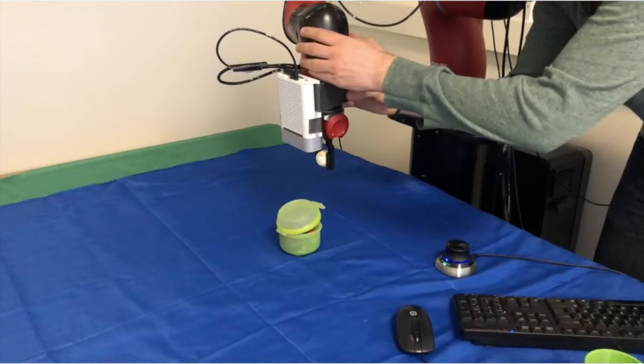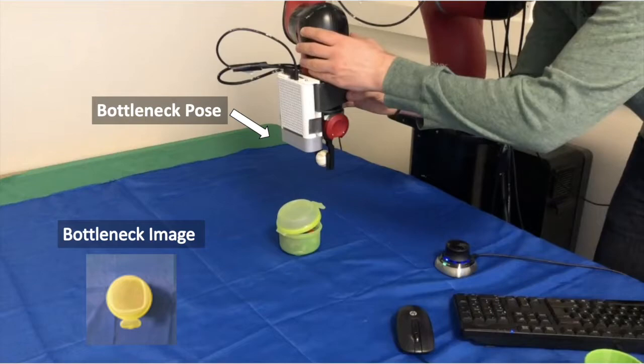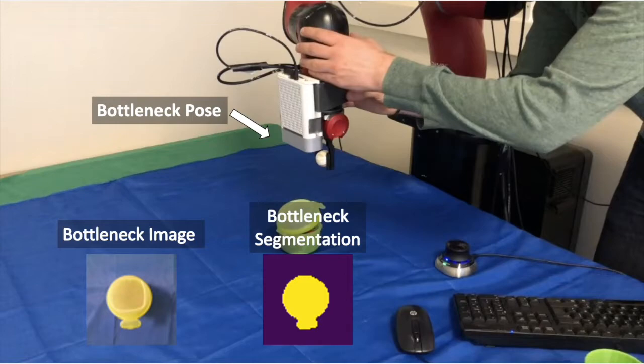In greater detail, our method works as follows. During the demonstration phase, when we reach the bottleneck pose, we take an image from the wrist camera and use a network trained in simulation to obtain the bottleneck segmentation.